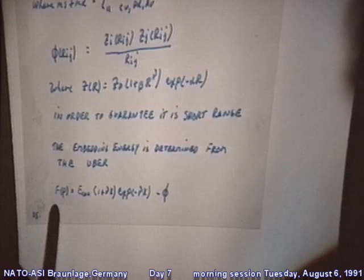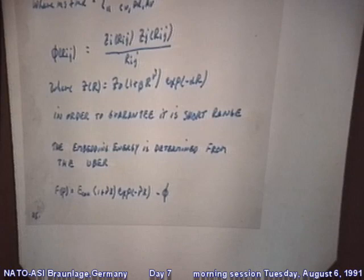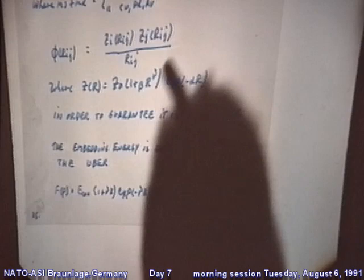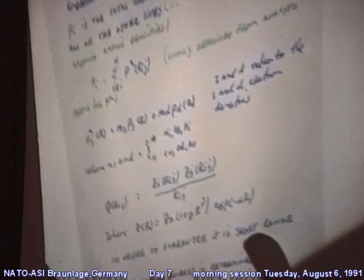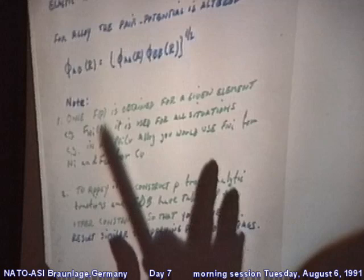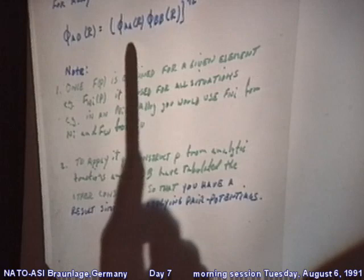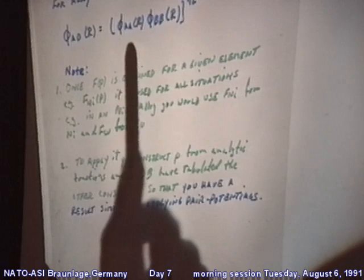Most recently, what Foiles, Daw, and Baskes have done is to use our universal energy relationship and fit the pair interaction to various physical parameters — such as elastic constants and vacancy formation energies — to determine the constants in this equation. Then they generate a table of the embedding energy, which is the glue holding the solid together. Once that's done, say for nickel, you don't have to do it again. You just take that nickel embedding function, overlap the electron densities for a particular situation, calculate the embedding energy, and evaluate the expression for a particular atom at some site. For alloys in an older version, the pair repulsion was just an average, and you use the embedding energy for each alloy atom that appears in the solid.